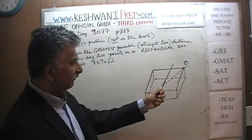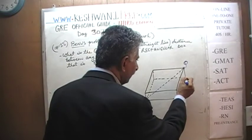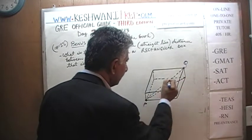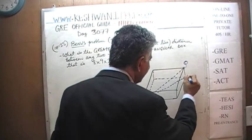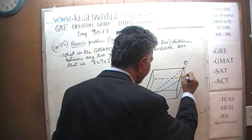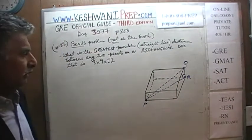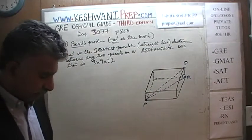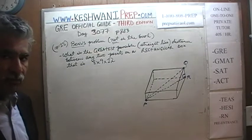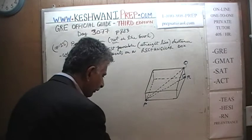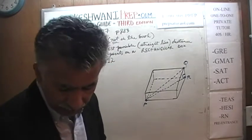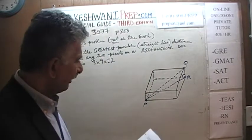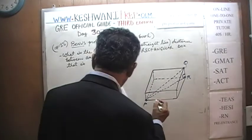In order to find this distance, just like last time, we have to make use of this triangle right here. Let's call it PQR, and this angle right here is the right angle. The greatest possible distance is going to be PQ. The box happens to be 8 by 9 by 12.